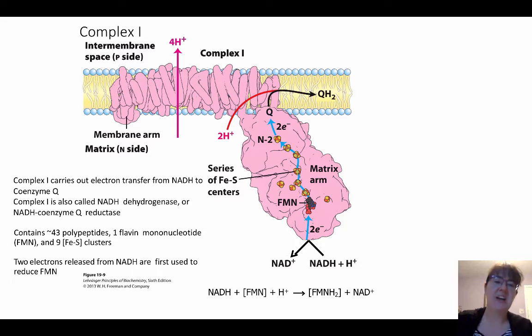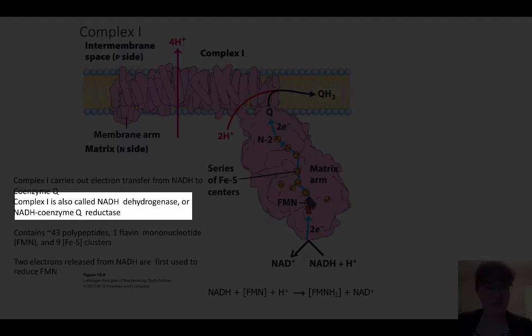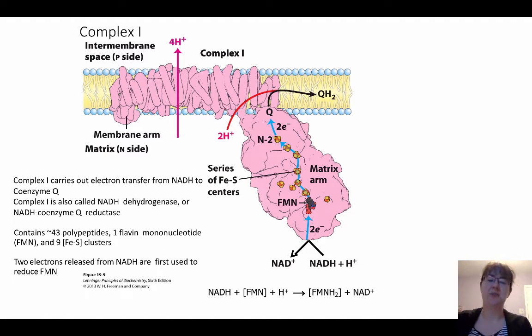So taking a closer look at complex one. So there's a lot of things going on here. So we're going to take a look at different parts of this in turn. So starting actually at the bottom, this is going to carry out the electron transfer from NADH all the way to coenzyme Q. So we're going to make it all the way through. This is therefore called the NADH dehydrogenase or the NADH coenzyme Q reductase to notice that it's got both parts in there.